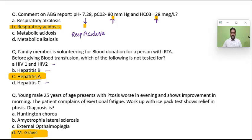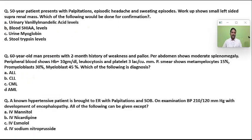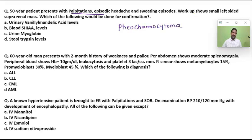This is just a rapid revision for you to understand the answers to these questions. A 50-year-old with palpitations, episodic headache, and sweating — workup shows a small left-sided suprarenal mass. These are suggestive of pheochromocytoma. The test used for confirmation is urinary vanillylmandelic acid (VMA) levels.